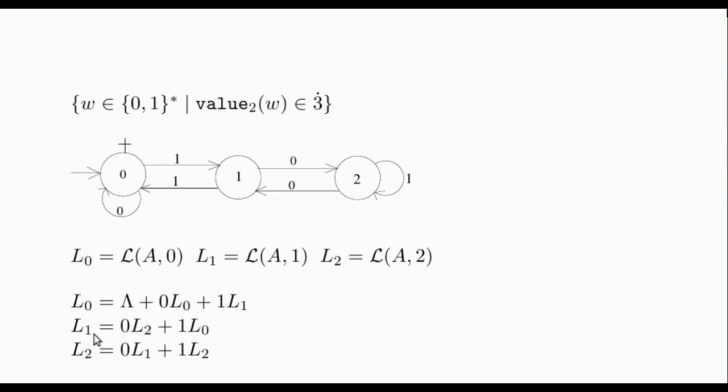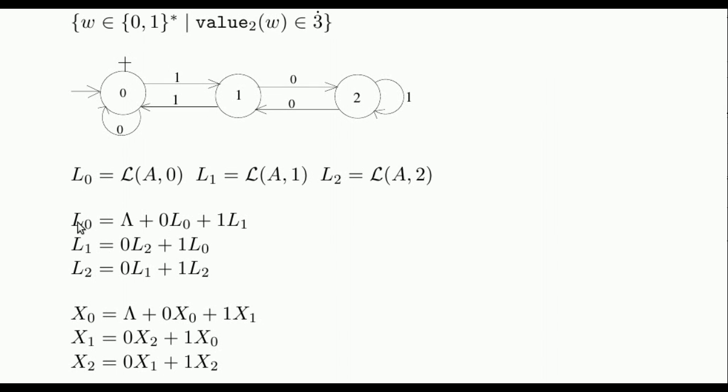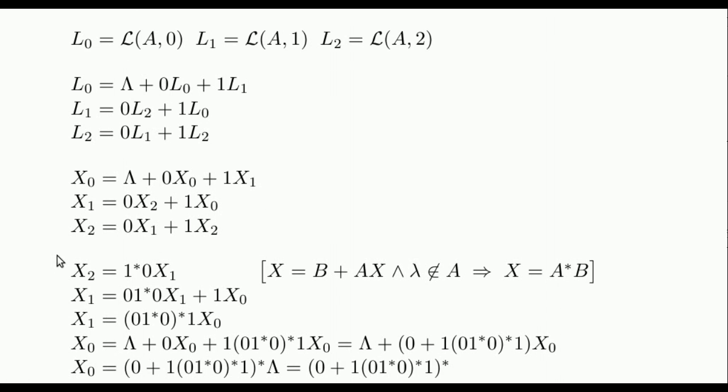Similarly, the words recognized from state 1 cannot be the empty word, since this state is not accepting, so they either start with a 0 and are followed by a word that is accepted starting from state 2, or they start with a 1 and are followed by a word that is accepted starting from state 0. Analogously, we can deduce another equality for L2. These equalities guarantee that L0, L1, and L2 are a solution to this system of equations. We will use Arden's lemma to isolate the variables, see that the solution is actually unique, and also obtain in the way a regular expression representing the language recognized by the automaton.